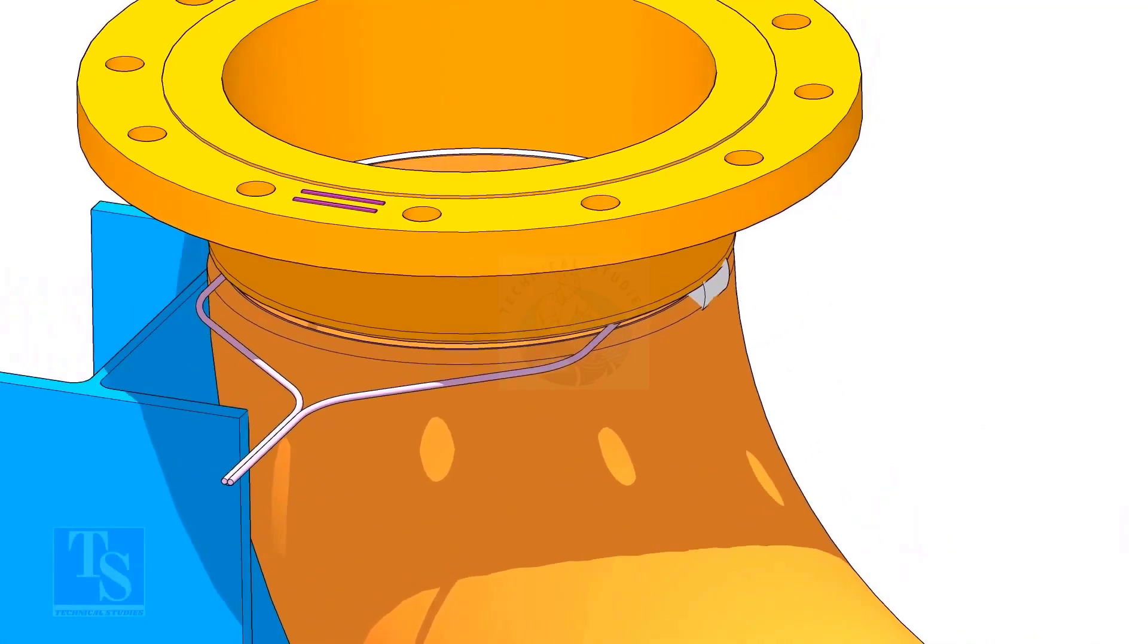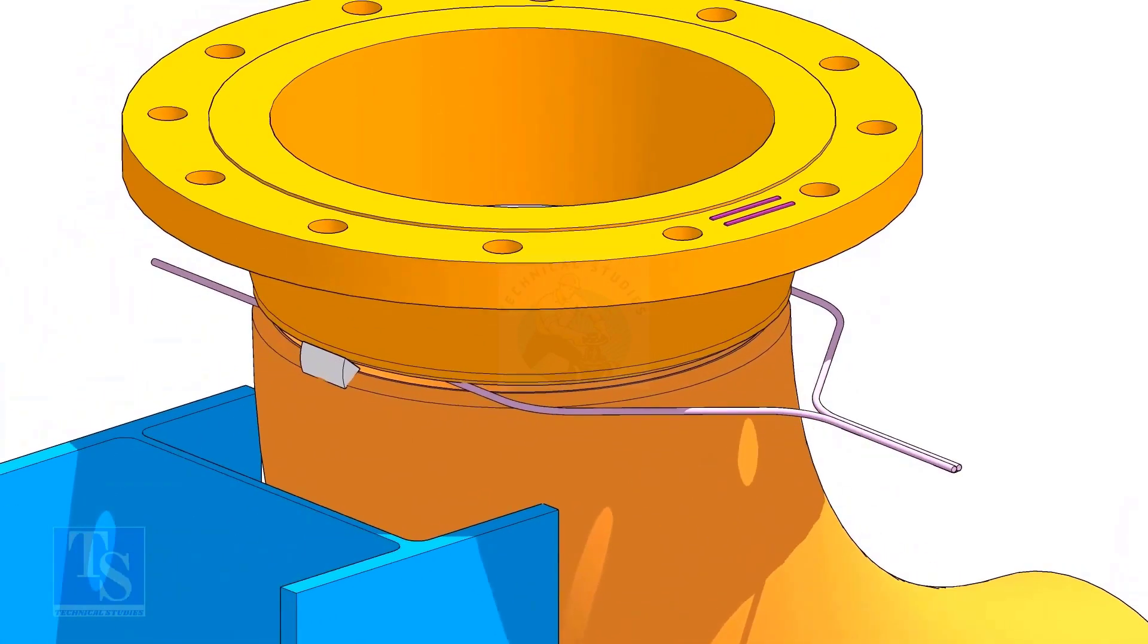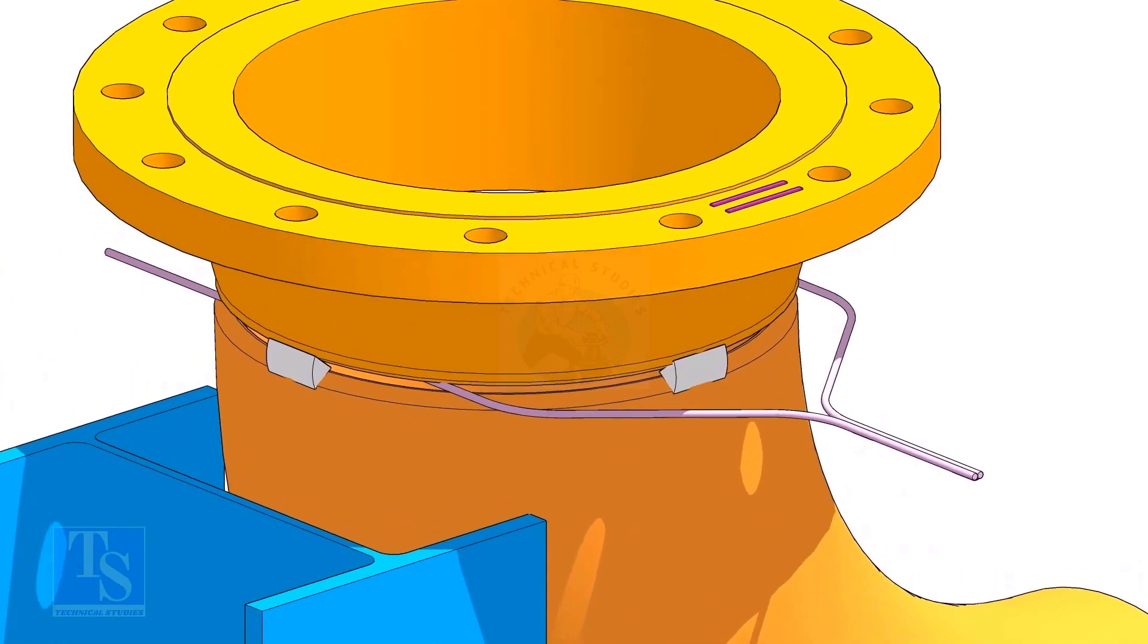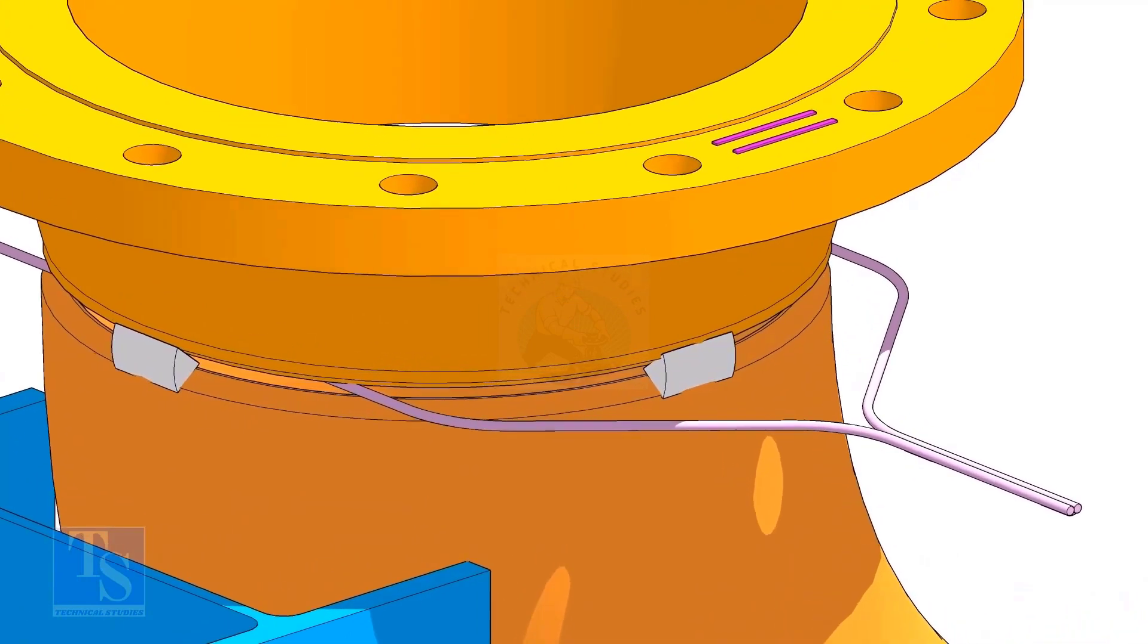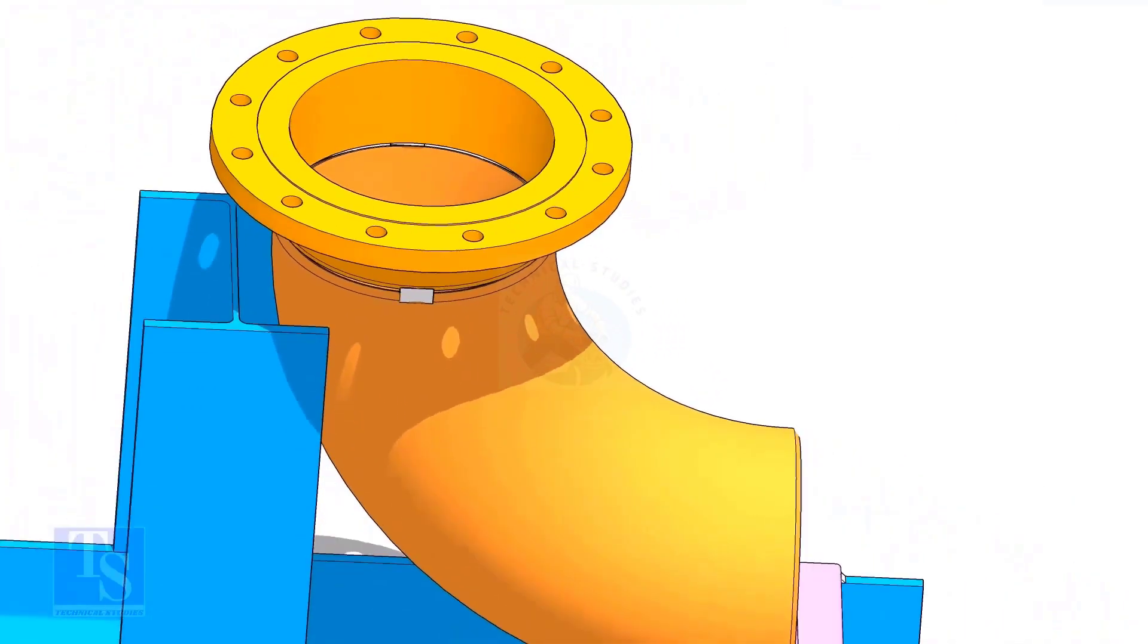Tack weld the flange to the pipe in 180 degree directions. After the tack weld, remove the gap rod.